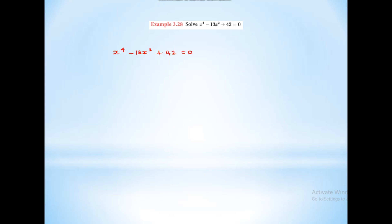Now we have x⁴ minus 13x² plus 42 equal to 0. Since it is a degree-4 equation, it has 4 roots. We substitute a equal to x², so we factorize: a² minus 13a plus 42 equal to 0.